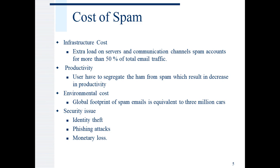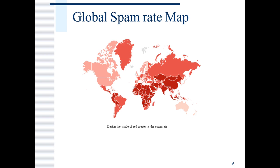Considering those challenges it is highly imperative that an efficient spam filter is required. This is the global spam rate map. As you can see countries like India and regions like Africa the spam rate is very high. The spam rate is indicated by the shade of red. The darker the shade of red higher the spam rate.